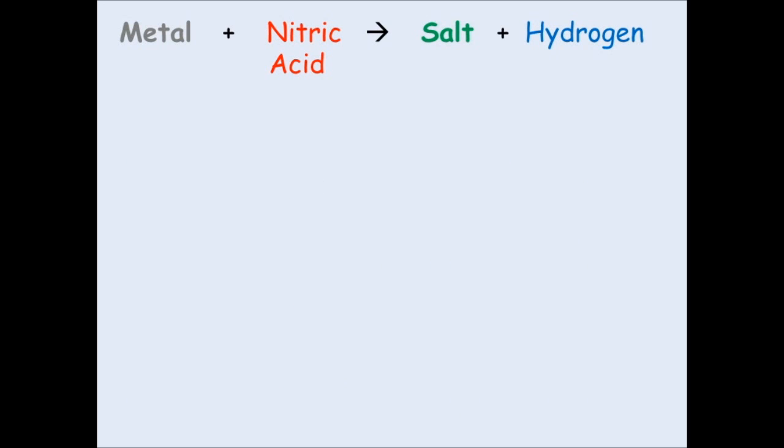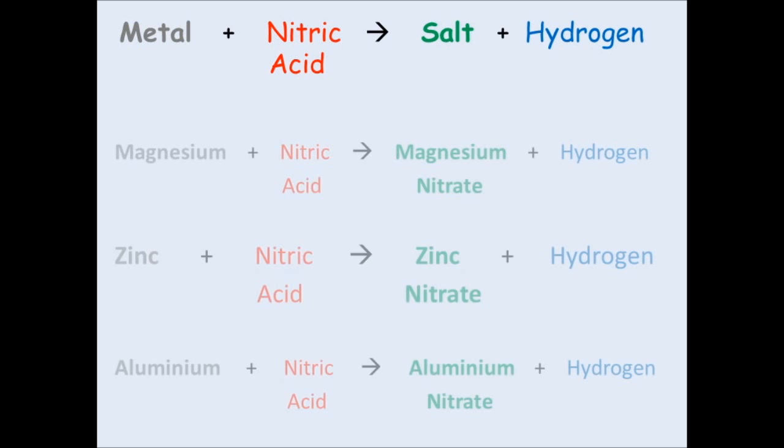So the third one, we're using nitric acid now. And when you use nitric acid, you get nitrate salts. So magnesium plus nitric acid makes magnesium nitrate plus hydrogen. Zinc plus nitric acid makes zinc nitrate plus hydrogen. Aluminum plus nitric acid makes aluminum nitrate plus hydrogen.